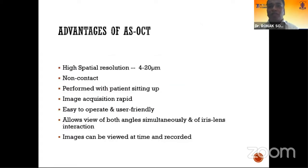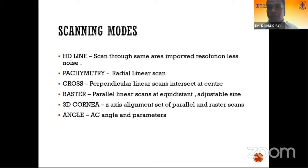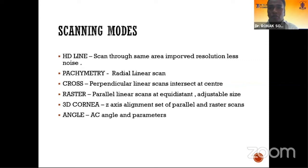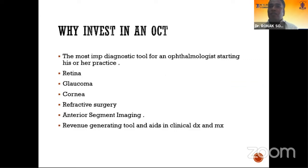The advantage of an anterior segment OCT is its highest axial resolution. It's a non-contact device performed with the patient sitting up. Image acquisition is rapid and can be recorded for monitoring purposes. Various scanning modes exist for various pathologies — an HD scan provides a scan through the same area and improves resolution. Pachymetric mapping uses a radial scan so that a diffuse area can be measured. One should invest in OCT because it helps in diagnosing retinal conditions, glaucoma, cornea, refractive surgery, and anterior segment imaging. It is a revenue-generating tool that aids in clinical diagnosis and management.